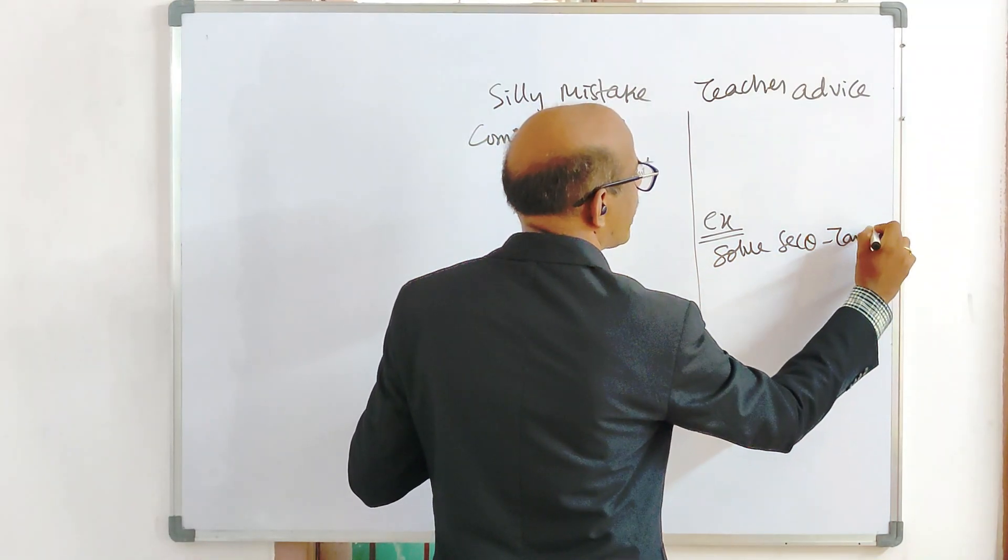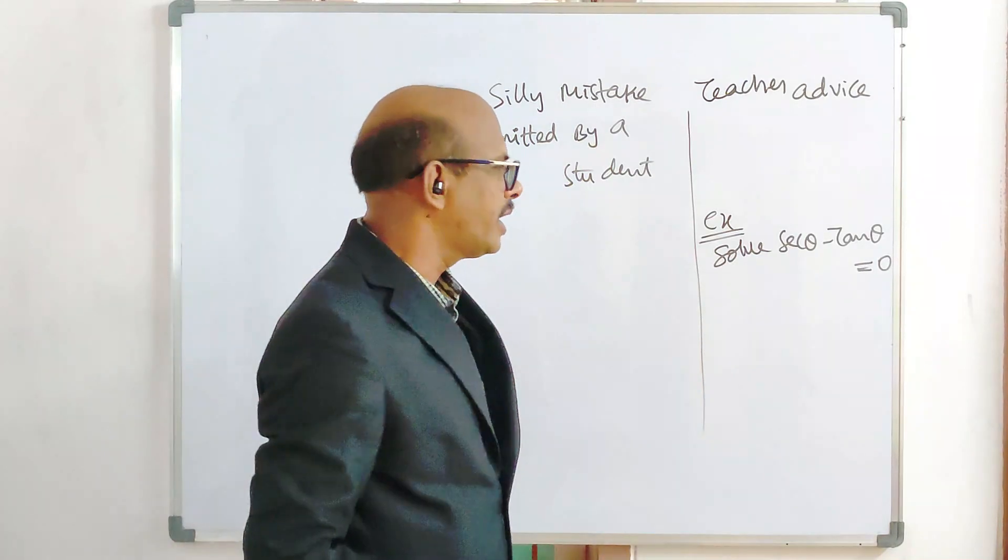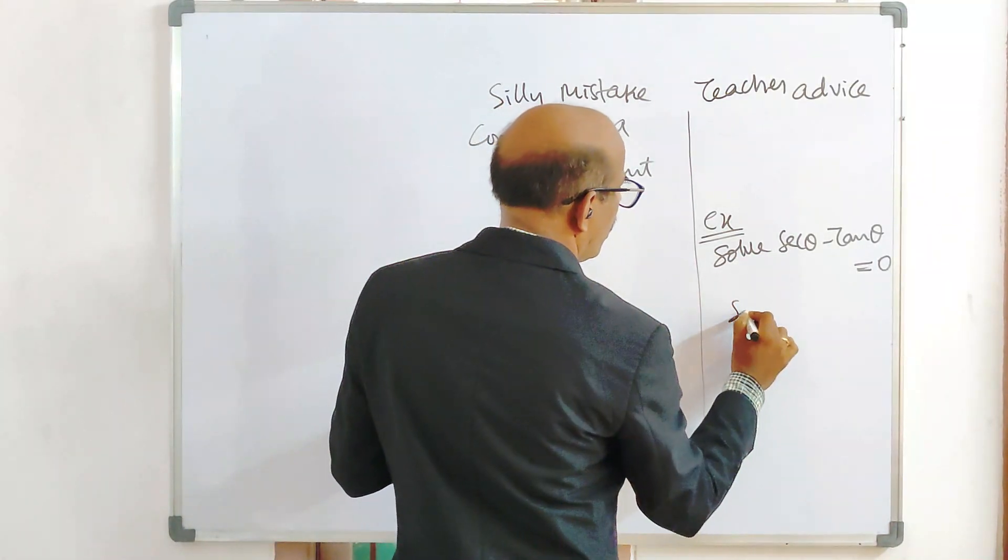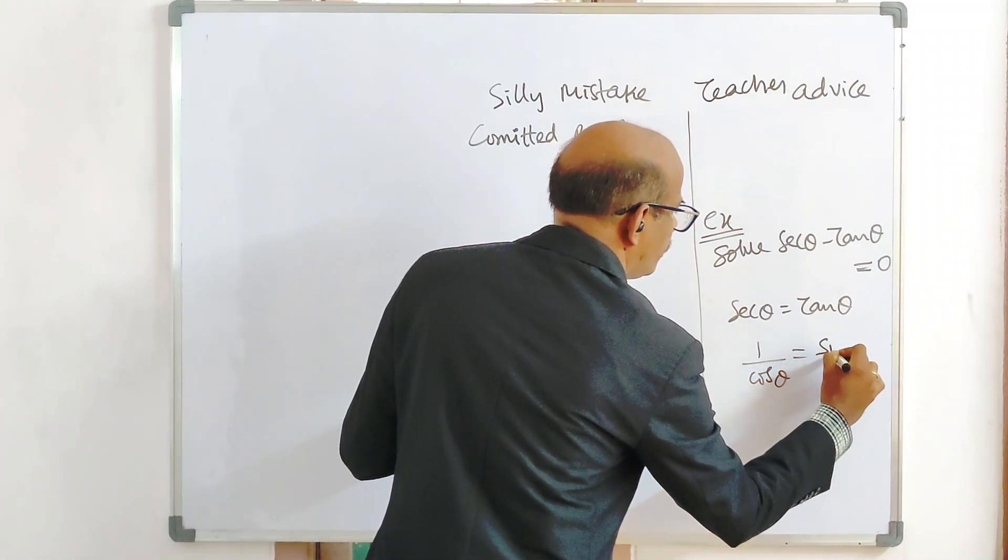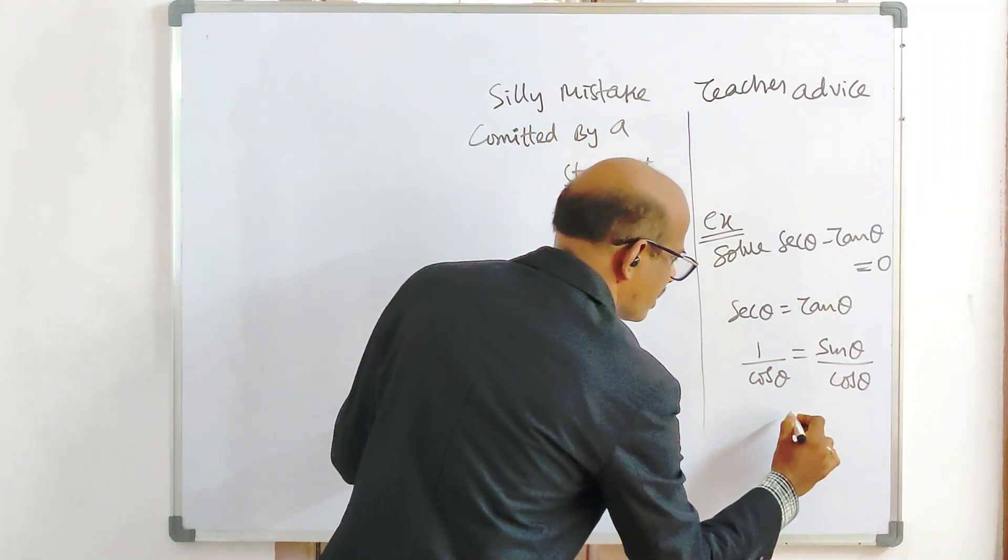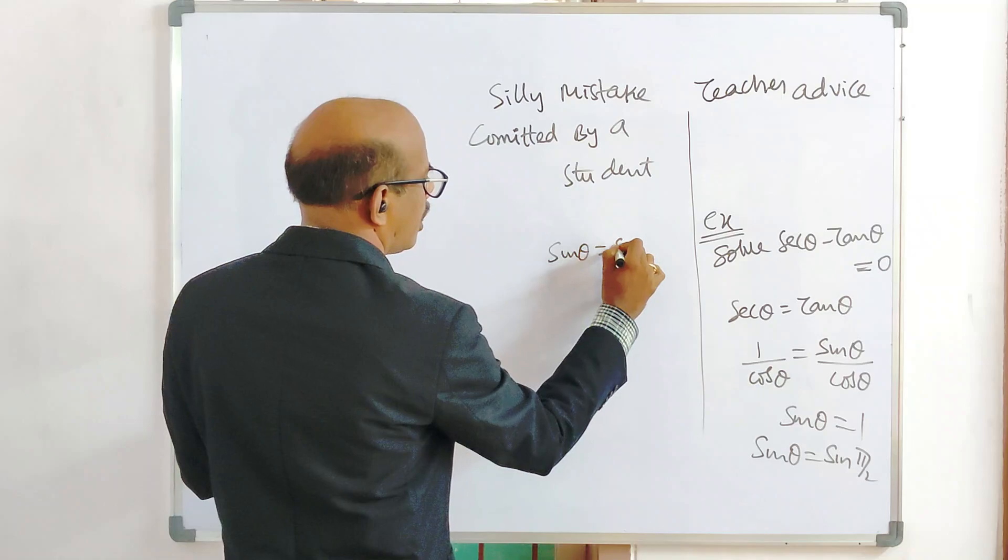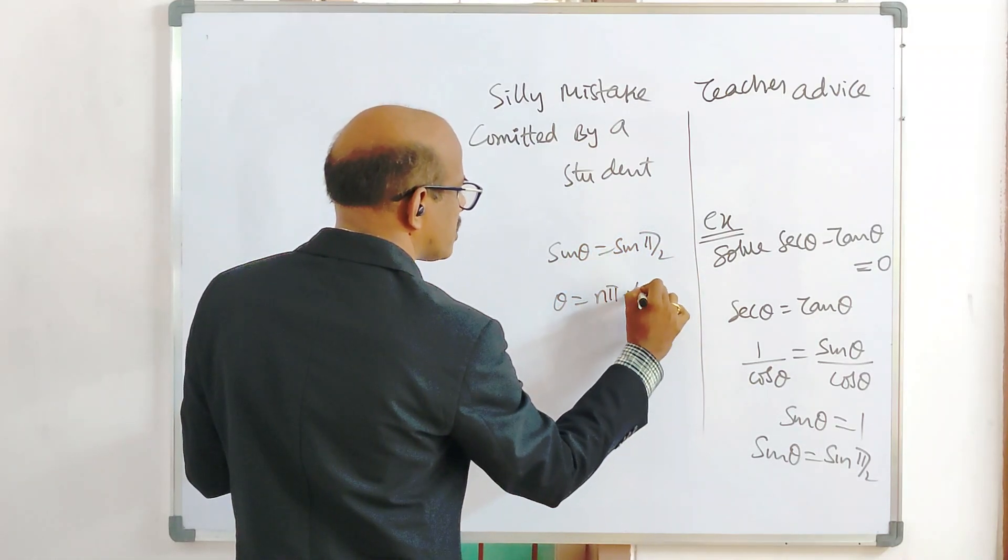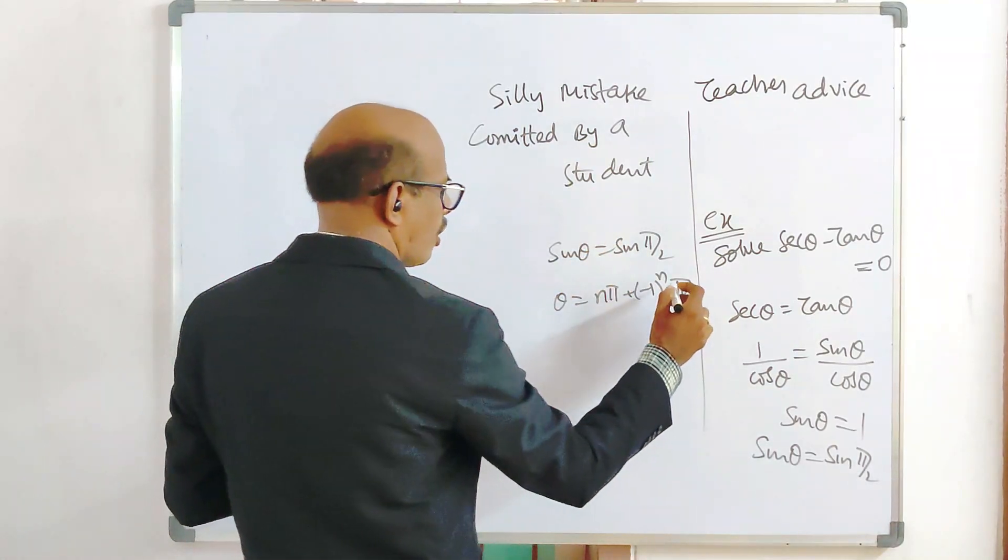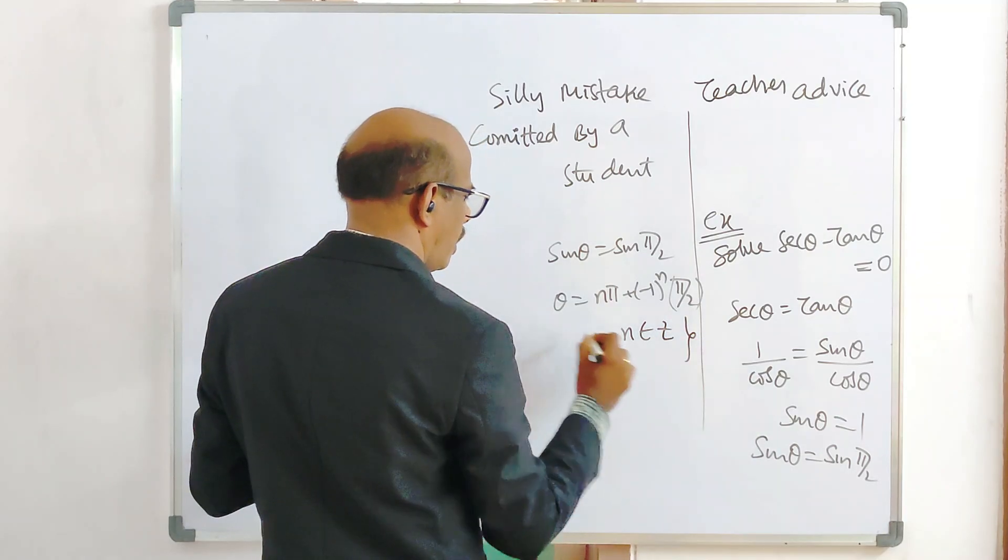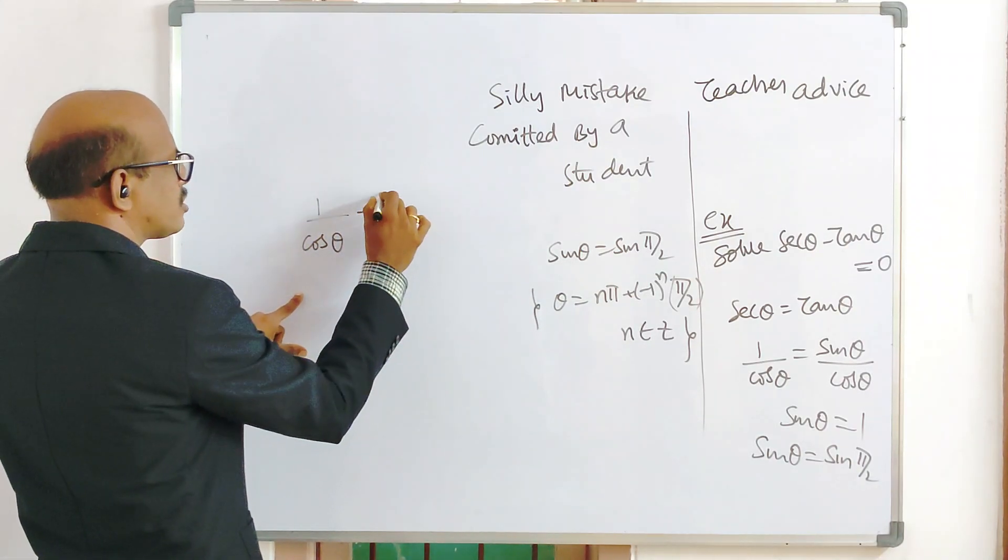Solve sec theta minus tan theta equal to 0. It is one example, there are many examples. Observe seriously, your observation required. Sec theta equal to tan theta. Secant as 1 by cos, tan as sin by cos. You know very well, cos cos get cancelled, sin theta equal to 1. So 1 can be sin pi by 2. Sin theta equal to sin alpha. By the general solution you have an idea: theta is n pi plus minus 1 whole power n alpha. So sin theta equal to sin alpha, theta equal to n pi plus minus 1 to the power n into alpha.